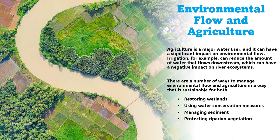Some of the ways to manage environmental flow in agriculture include restoring wetlands, which helps to store water and release it slowly, maintaining natural flow regimes that can benefit both agriculture and the environment. Using water conservation measures is also important — such as drip irrigation or planting more drought-tolerant crops — which can help to reduce the amount of water withdrawn from rivers or streams.